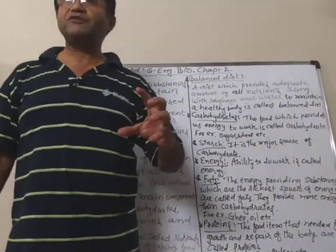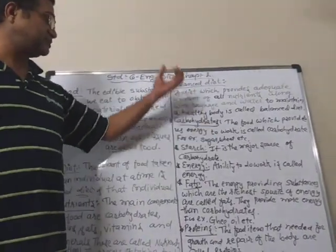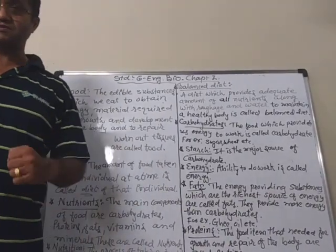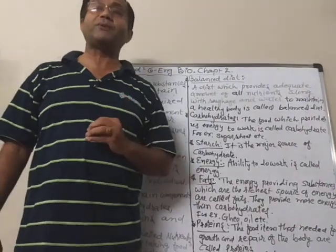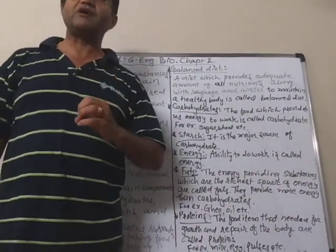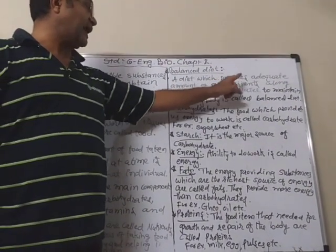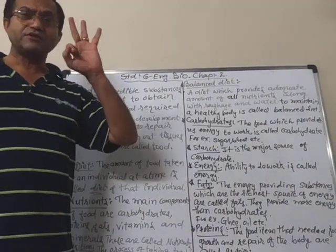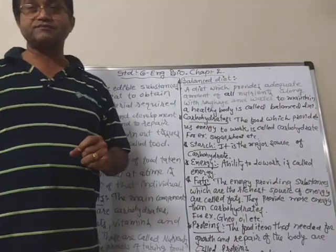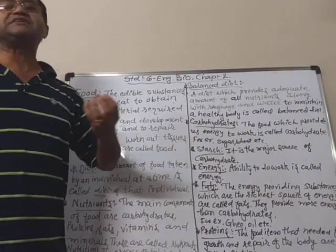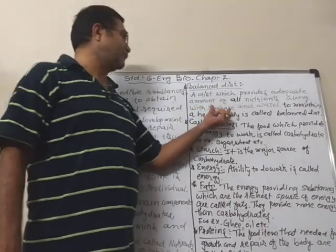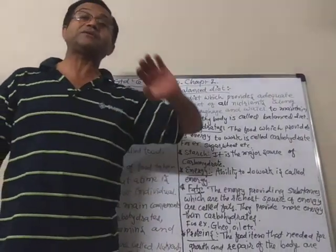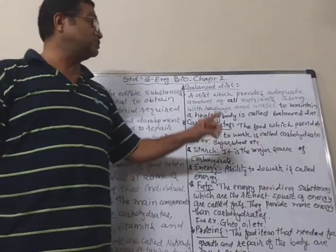We take different types of food because different types of food give us different types of nutrients. If a diet provides an adequate amount of all nutrients — carbohydrates, fats, vitamins, and minerals — along with roughage and water, that is called a balanced diet. Roughage is required for easy digestion. We must get an adequate amount of all these — not less, not more.